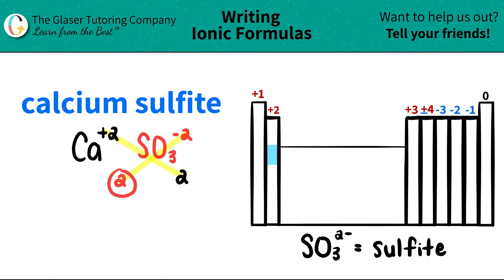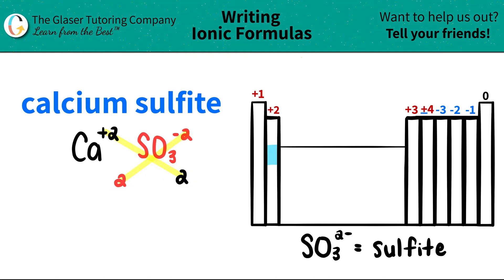When you have this, always simplify. Ionic compounds need to be in their most simplified form. So two and two — I can divide both of these by two. And two divided by two is just one. So that's how many of each I need for both of them. It's a one to one ratio between the calcium and the sulfite.